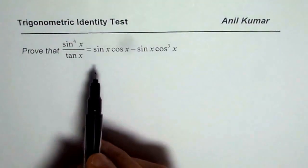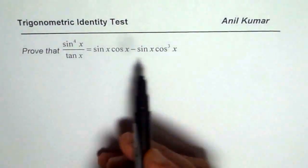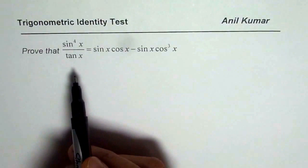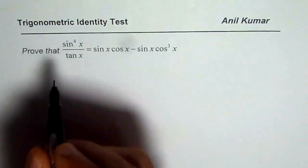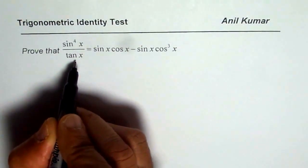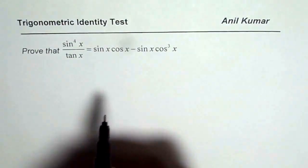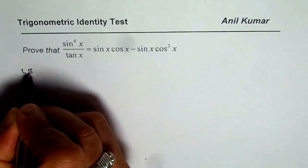Now in this particular case you could begin from left side or from right side. I will prefer to start from the left side. So let us write tan in terms of sin and cos since we have sin and cos on the right side. So let us begin with the left side.